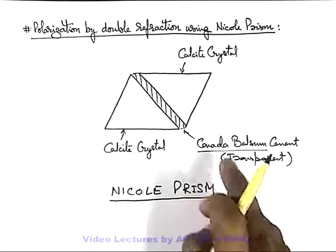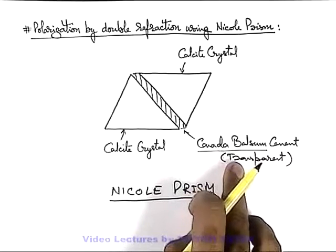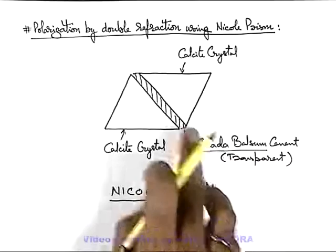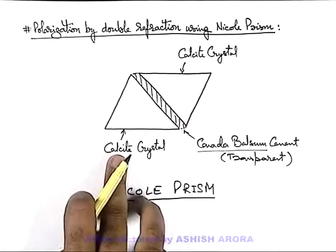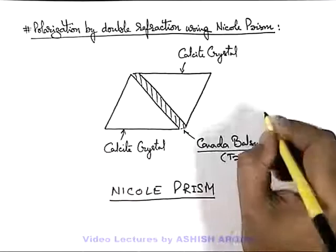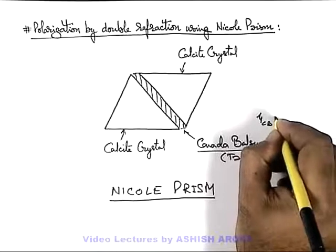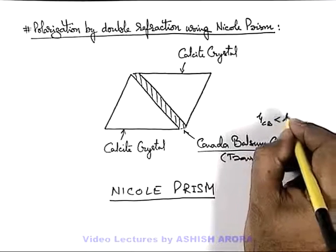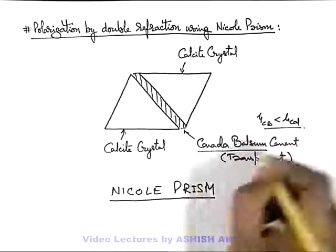This Canada balsam cement has a refractive index — mu of Canada balsam is less than mu of calcite crystal.